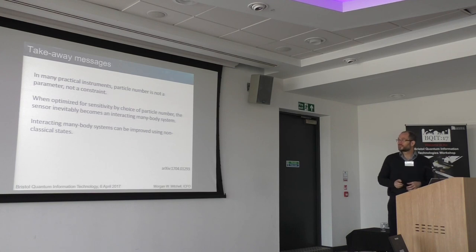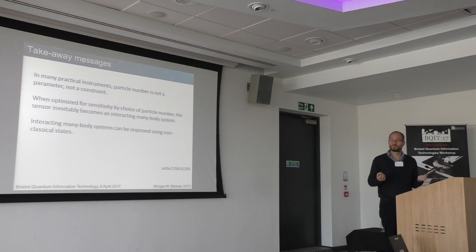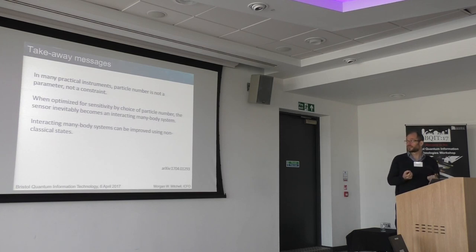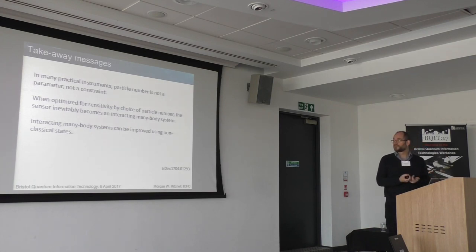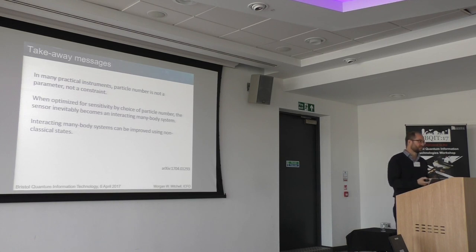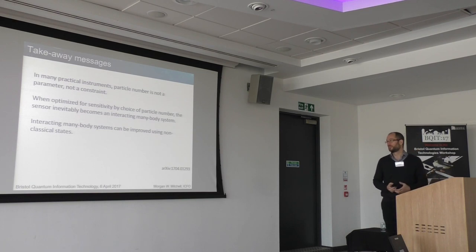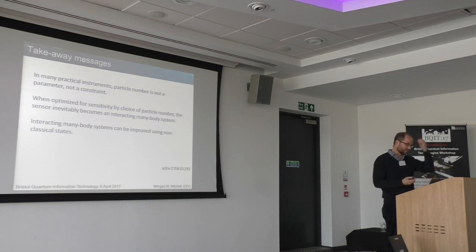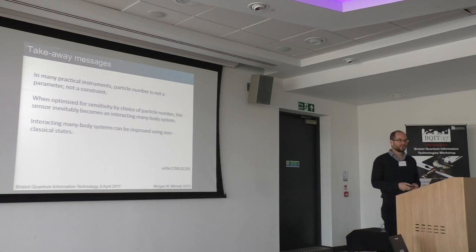Takeaway messages: in many practical instruments, particle number is a parameter, not a constraint. When you optimize an instrument for sensitivity by choosing the particle number, the sensor inevitably becomes an interacting many-body system. So we have to be thinking about interacting many-body systems and their quantum physics if we want to understand this class of instruments. And at least in this model — which is a realistic model for several systems — it is possible to get an advantage using quantum resources.